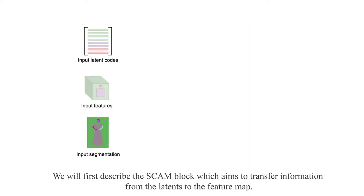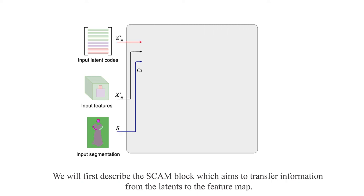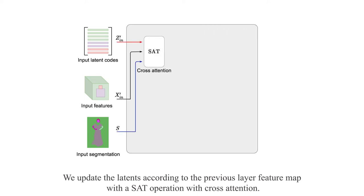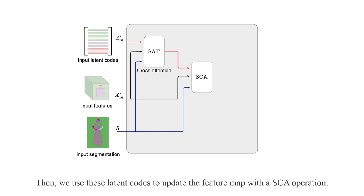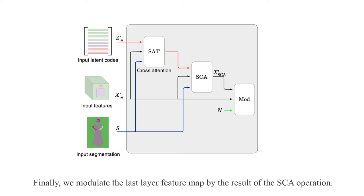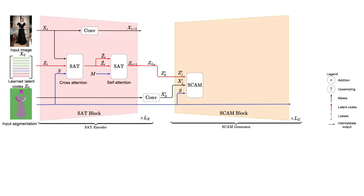We will first describe the SCAM block, which aims to transfer information from the latents to the feature map. We update the latents according to the previous layer feature map with a SAT cross-attention operation. Then, we use the latent codes to update the feature map with a SCA operation. Finally, we modulate the last layer feature map by the results of the SCA operation.